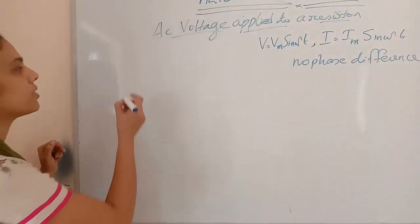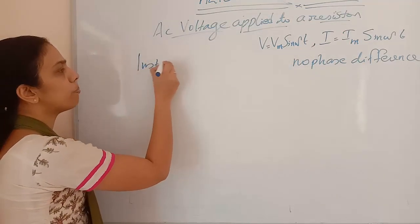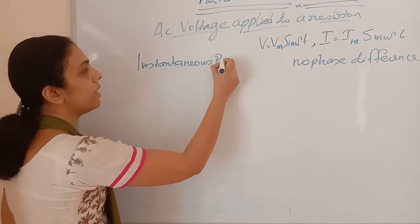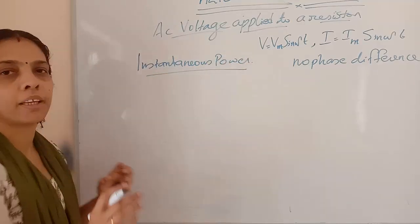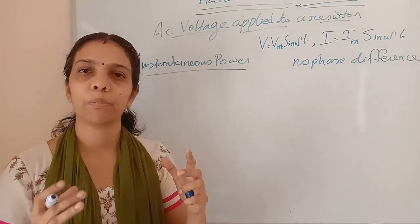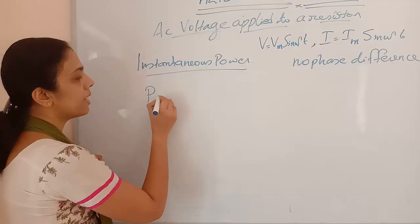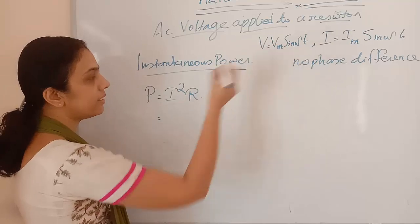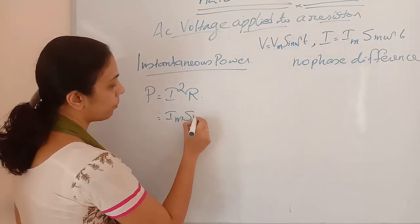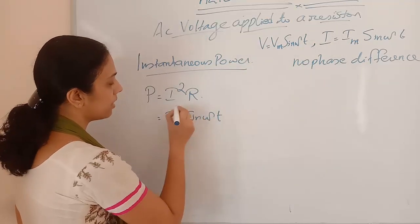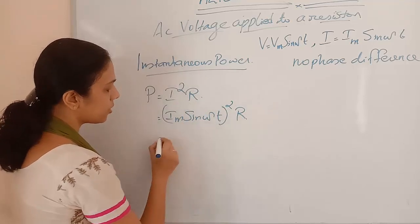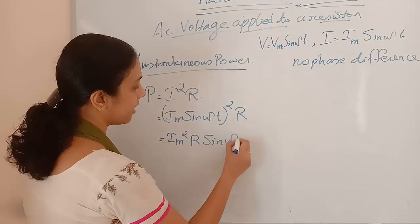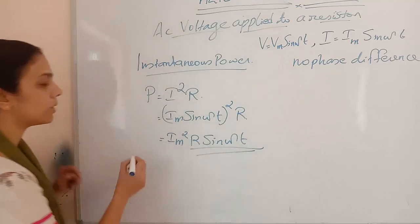Now we are going to study instantaneous power — the power developed in R, or power dissipated through the resistor. What will be the power? We know the formula P = I²R. Here I = Im sin(ωt), so P = Im sin(ωt) whole squared into R, giving us Im²R sin²(ωt).